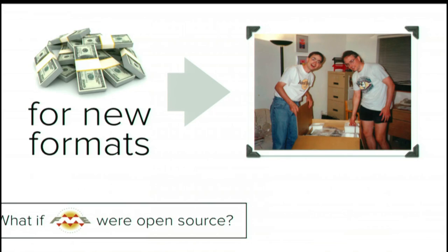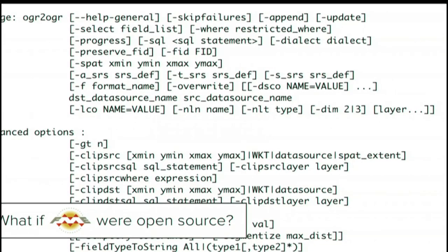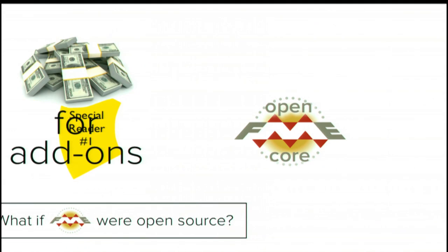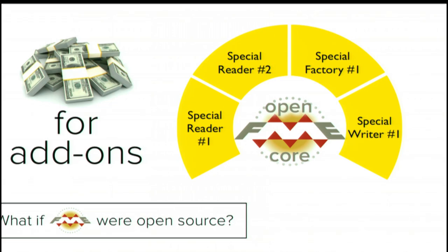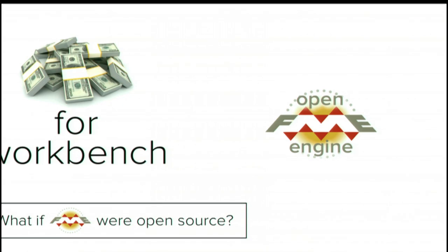So Safe Software would probably still be Dale and Don in the basement. And you can kind of see the end product of that model by examining the open source ogr2ogr tool, which has support for a decent number of formats but has all the usability of a Soyuz space capsule. How about another model — something more nuanced? Suppose the FME core was open source, but Safe selectively sold access to certain format reader-writers or factories. The core is open, the add-ons are not. There's a potential model.